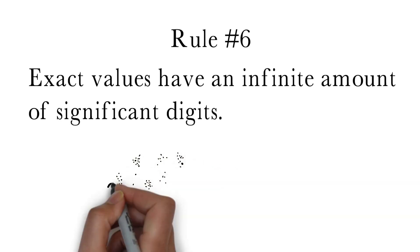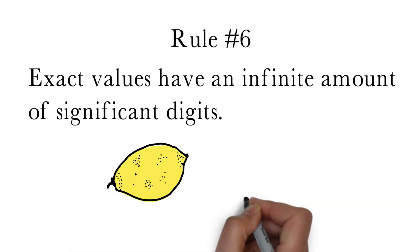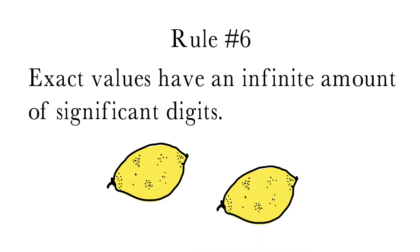For example, if I count that there are two lemons, this is not a measurement, but rather a counted value. There is no uncertainty in this value, so the number of significant digits is infinite.